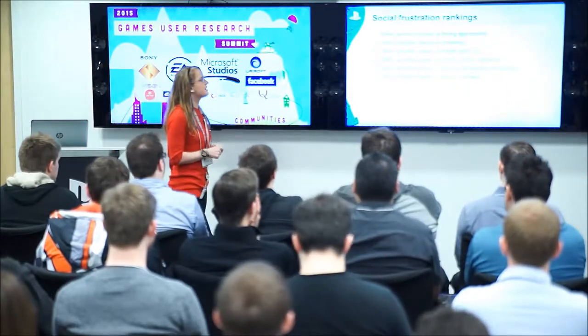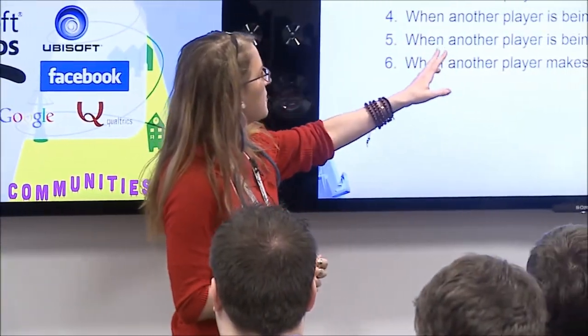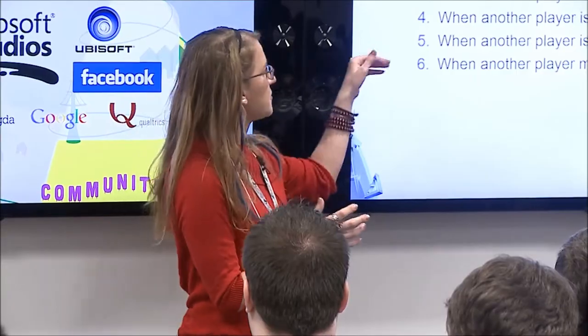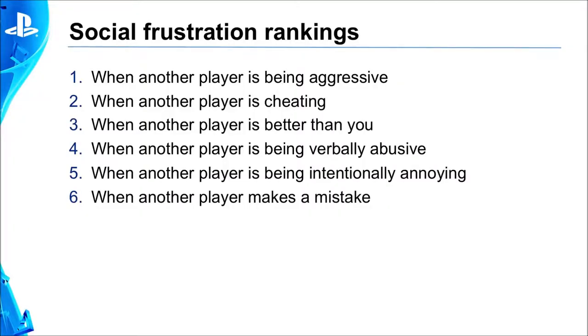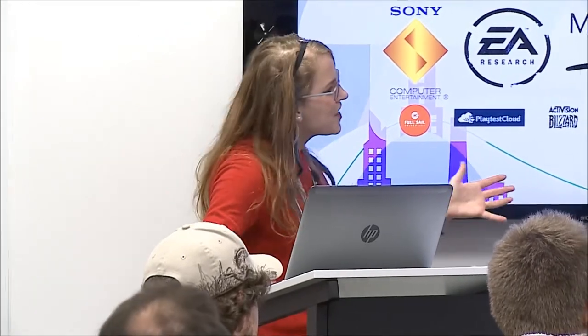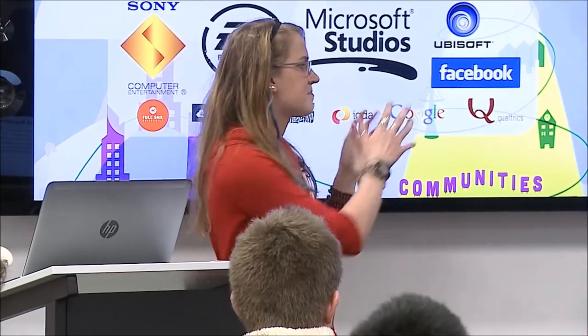Ranking social frustrations, the top three options — when another player was being aggressive, when another player was cheating, and when another player was better than you — were statistically indistinguishable. Then there was a significant drop to verbal abuse; people are actually remarkably tolerant of verbal abuse — it has to continue for a while. Further down the list: intentionally annoying behavior. And when another player makes a mistake, people are really tolerant — 'I was new once too, I'm going to be patient with this.' I thought that was pretty cool.